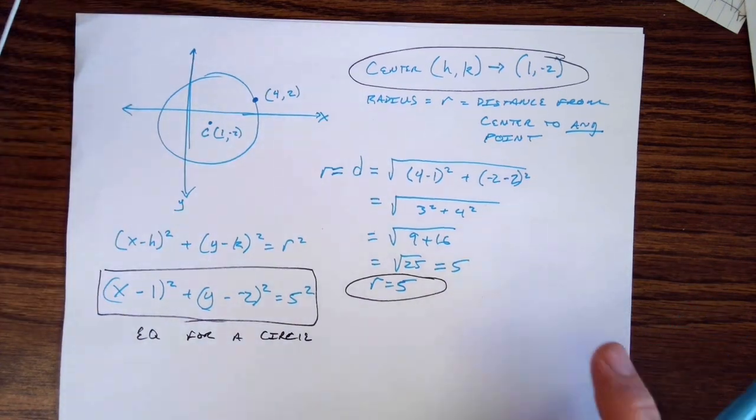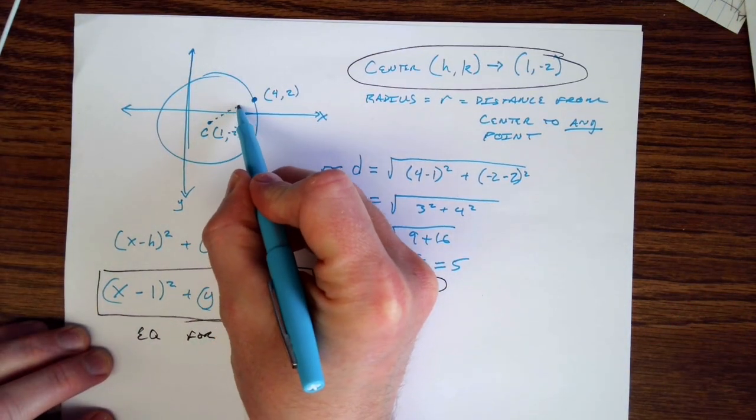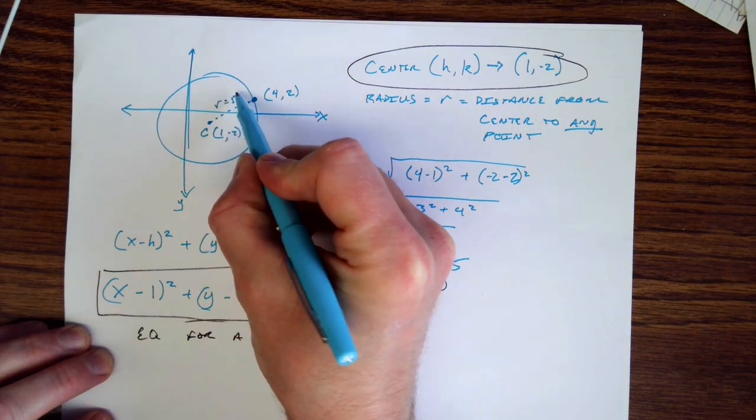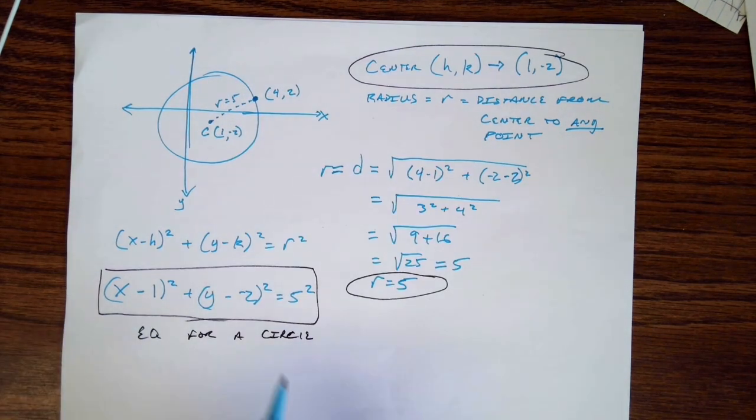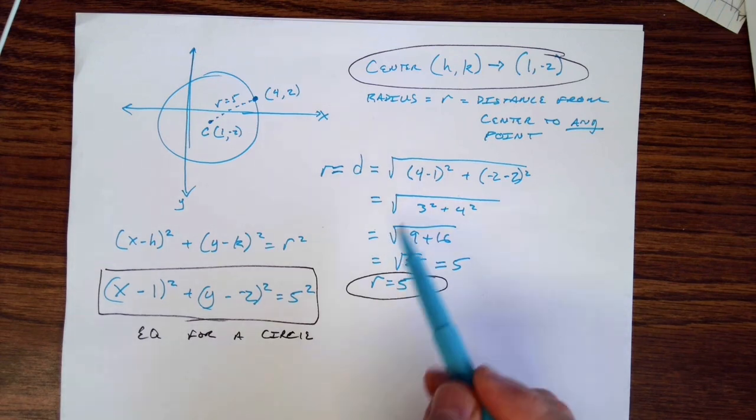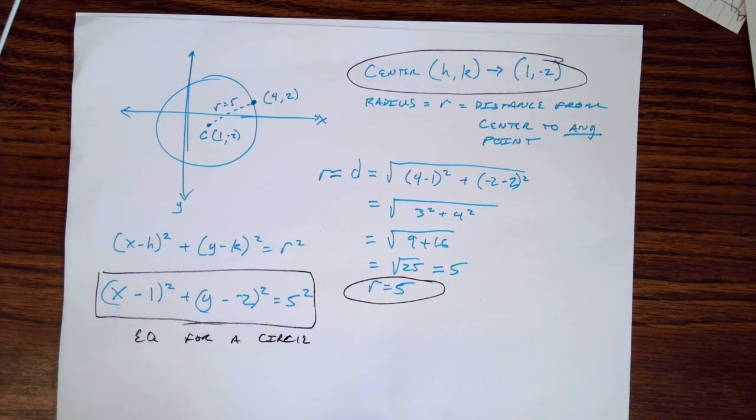Now the other thing that could also happen is maybe you were told that the radius is 5, in which case you don't need the second point, nor do you need to do the distance formula. You would just simply plug in the radius is 5, and there you go.